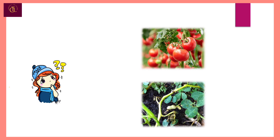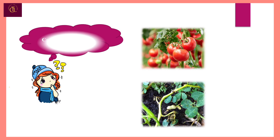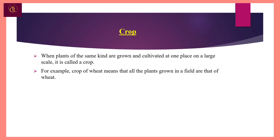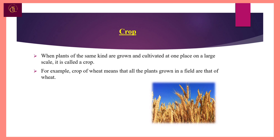You must have seen different plants at your home, such as tomato plants and groundnut plants. Can we call them a crop? No, we can't. The reason is that when the same type of plants are grown at a large scale, it is called a crop. When plants of the same kind are grown and cultivated at one place on a large scale, it is called a crop.